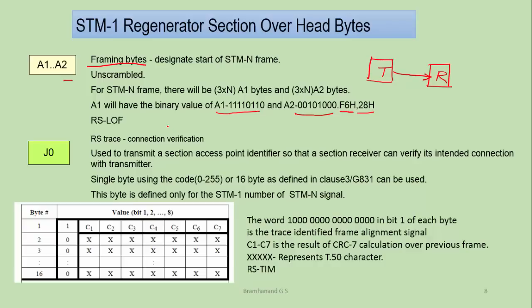One of the key alarms which gets raised if we don't receive these bytes is regenerator section loss of frame. If proper valid binary values of A1 and A2 are not received at the receiver side, the receiver will raise an alarm called regenerator section loss of frame. We shall discuss each and every alarm in SDH in more detail when we discuss about fault management.